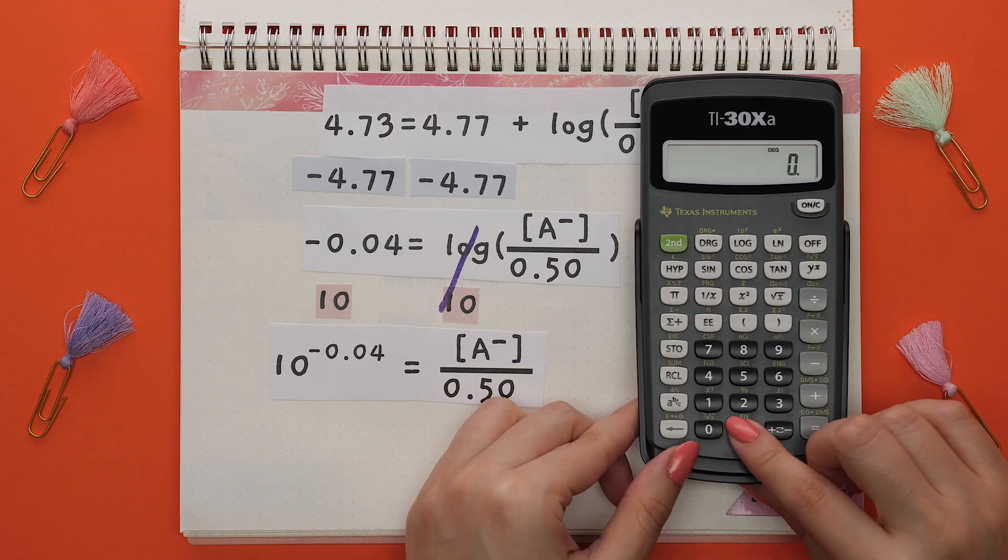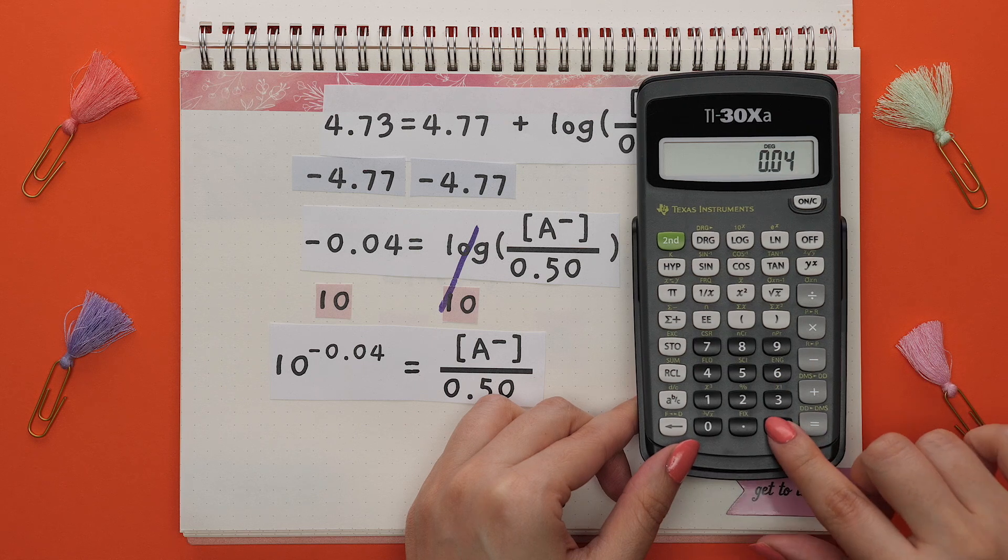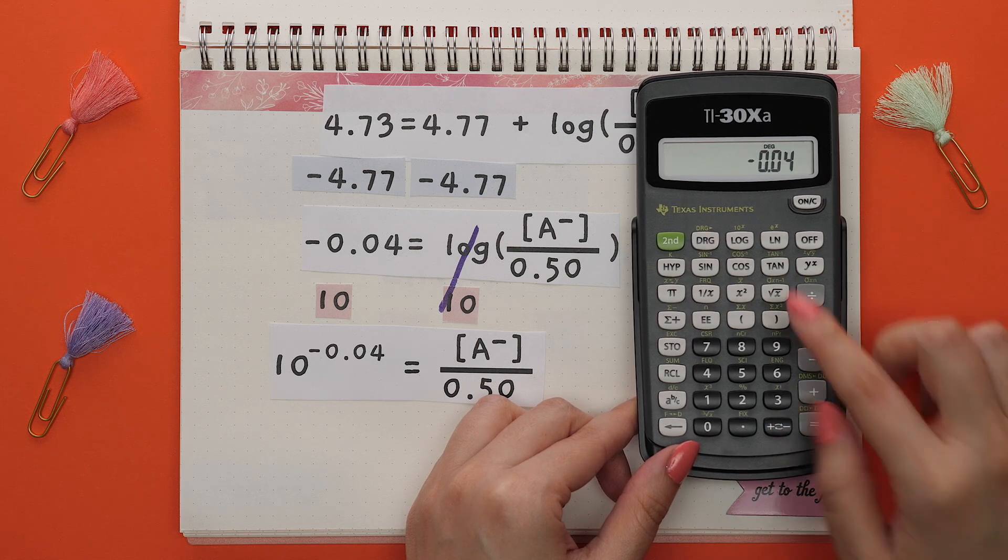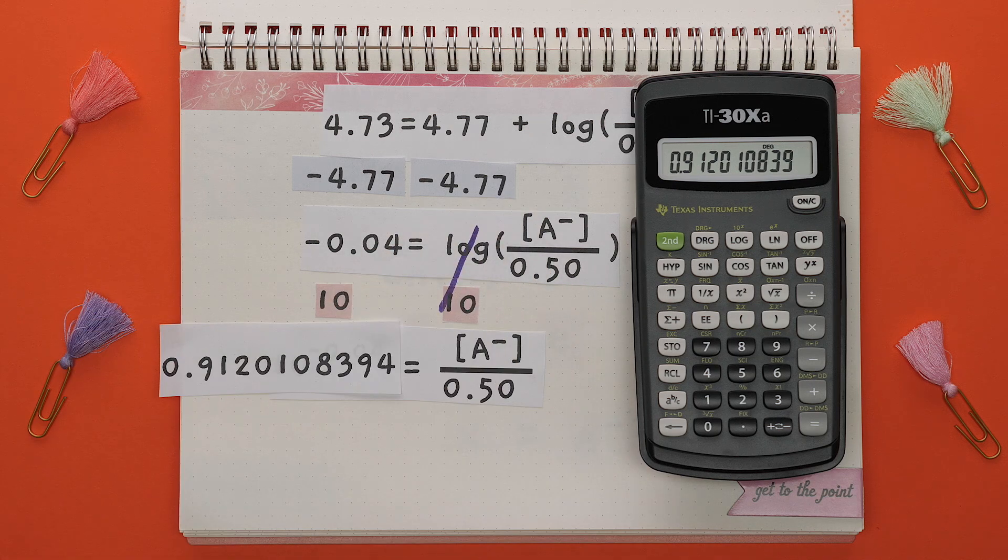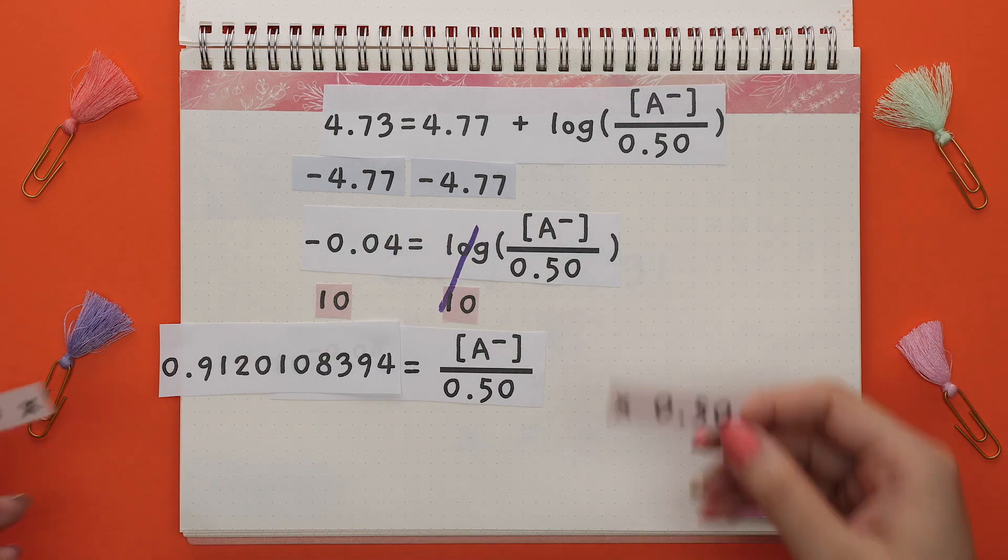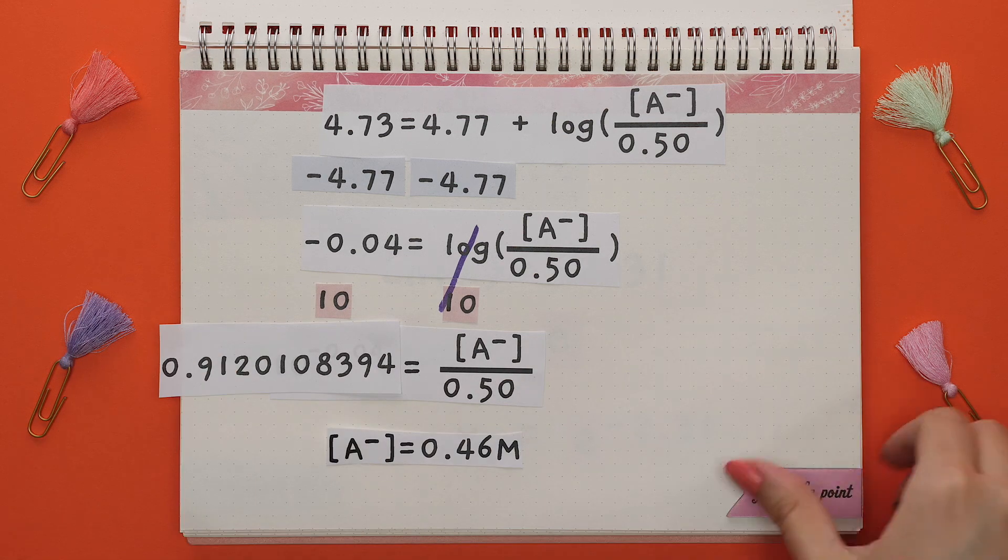To do this on a scientific calculator, plug in the exponent first of 0.04, enter the number, then press the negative sign, then press 2nd log and this is our value. To finish this question, we will multiply both sides by 0.5 and get this as our answer.